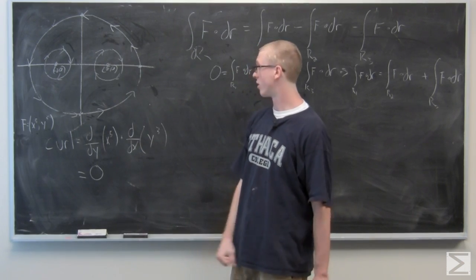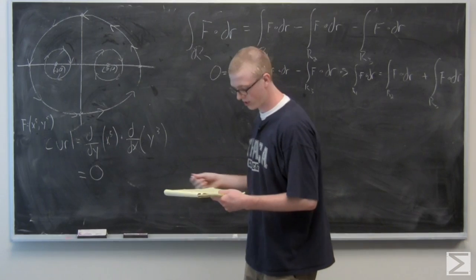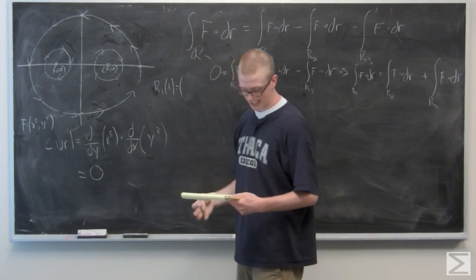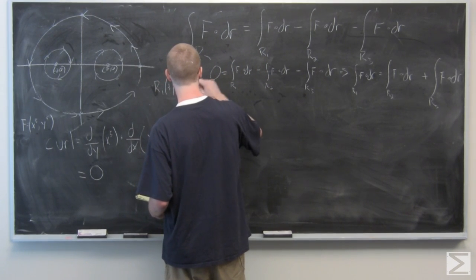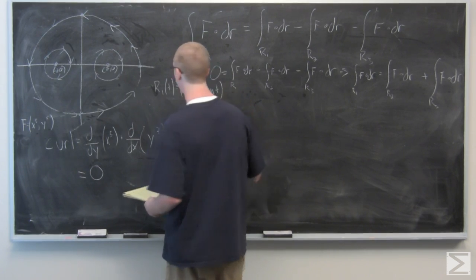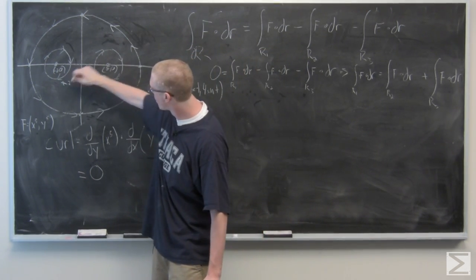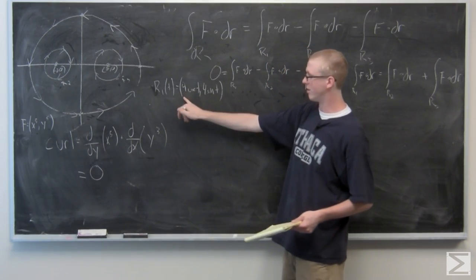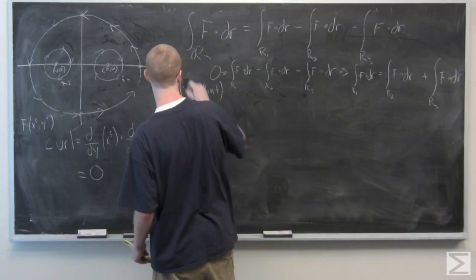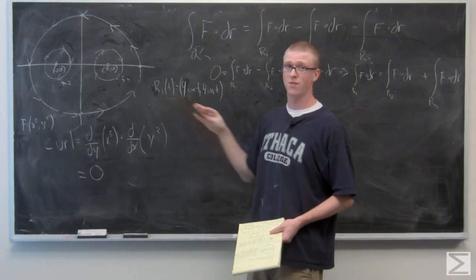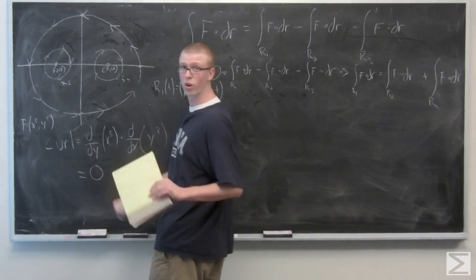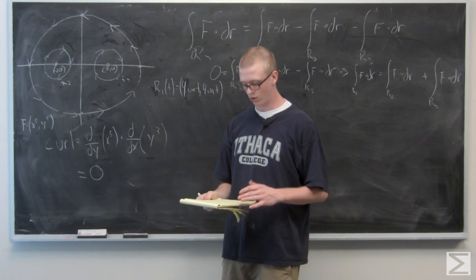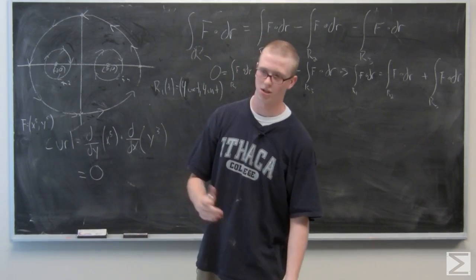Our outside circle is a circle of radius 4, so r1(t) is just 4cos(t), 4sin(t). For r2, we have a circle of radius 1 so the coefficient of cosine and sine is 1, but we do have a shift to account for. r2 is cosine(t) minus 2, comma sine(t). r3 is cosine(t) plus 2, comma sine(t).